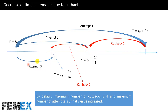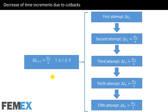After the second cutback, a third attempt begins where the time increment size is one quarter of the second attempt's size. By default, the maximum number of cutbacks is 4 and the maximum number of attempts is 5, and these can be increased. The sequence is: first attempt, first cutback, second attempt, second cutback, third attempt, third cutback, fourth attempt, fourth cutback, and finally fifth attempt.